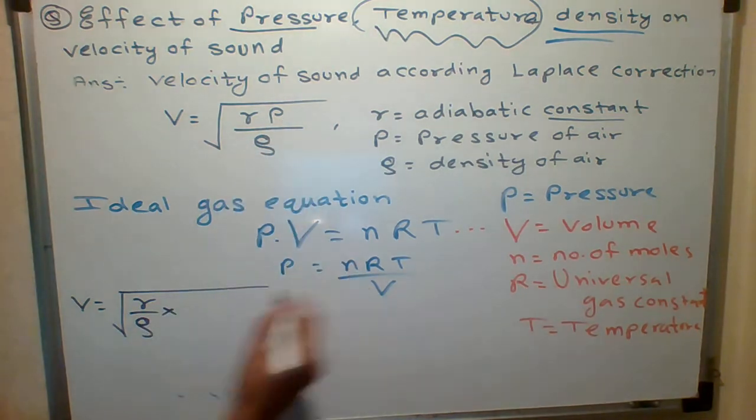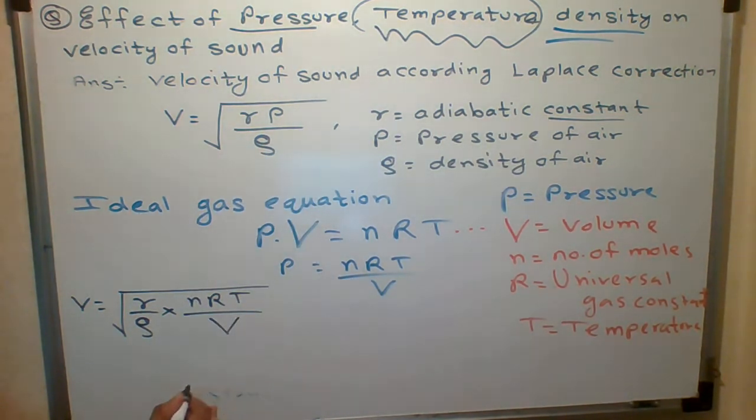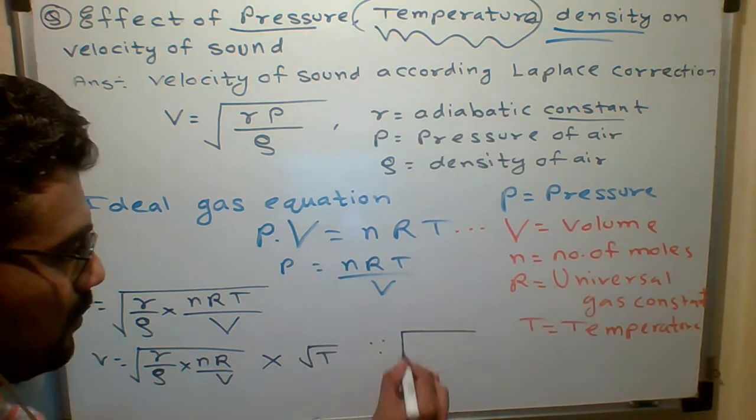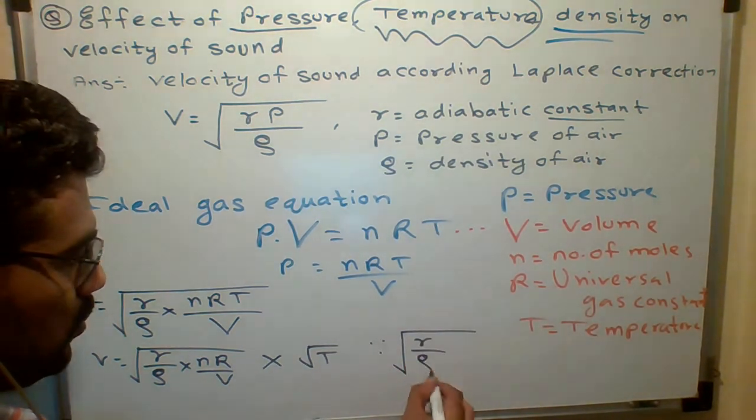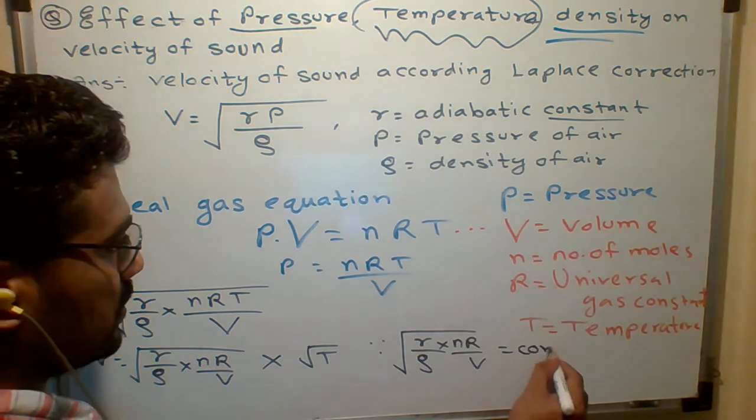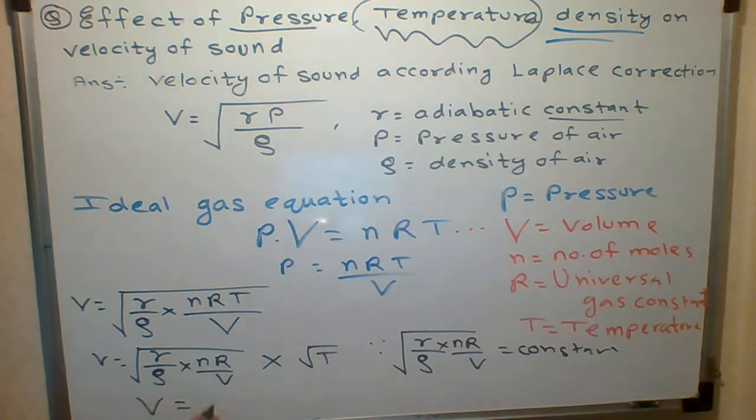So students, here under root of r upon rho. nRT upon volume. So students, here under root of r upon rho. nRT upon V are constant. It is constant. V is equal to constant.